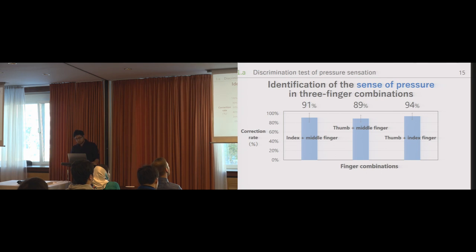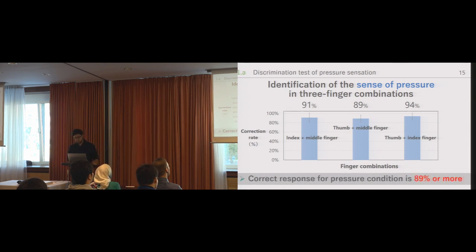The number of correct responses for the pressure condition is shown in this figure and as you can see the results indicate that the participant was able to identify whether the pressure sense was presented with a probability of 89% or more. We can see that a very high discrimination rate was obtained under any condition which is good.